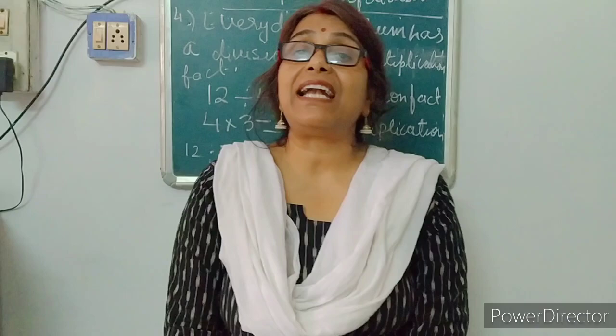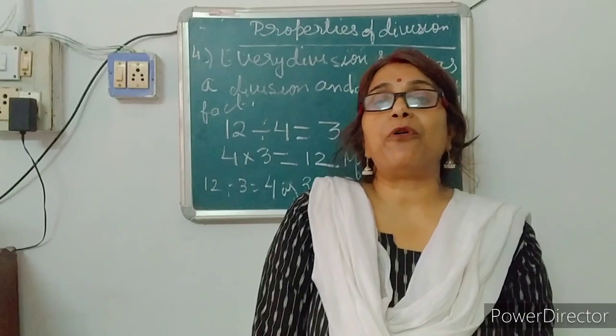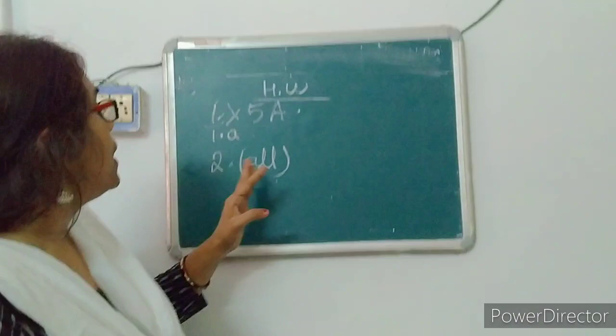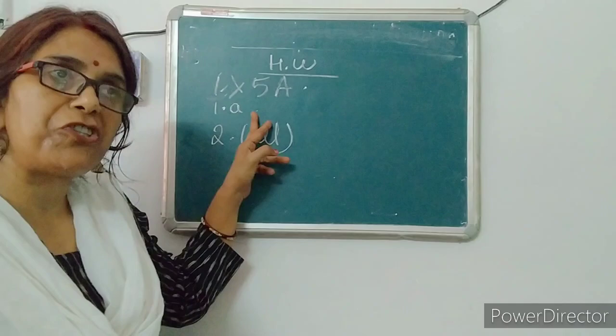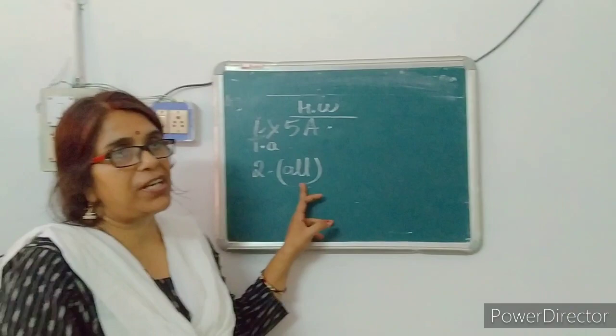Now all of you take out the copy. I am going to give homework — write down in the classwork copy. This is the homework: exercise 5A, question number 1, you have to solve question 8, and question number 2 is fill in the blanks — solve all the questions. Dear children, in this video number 1 of chapter 5, we learned division and properties of division. Thank you.